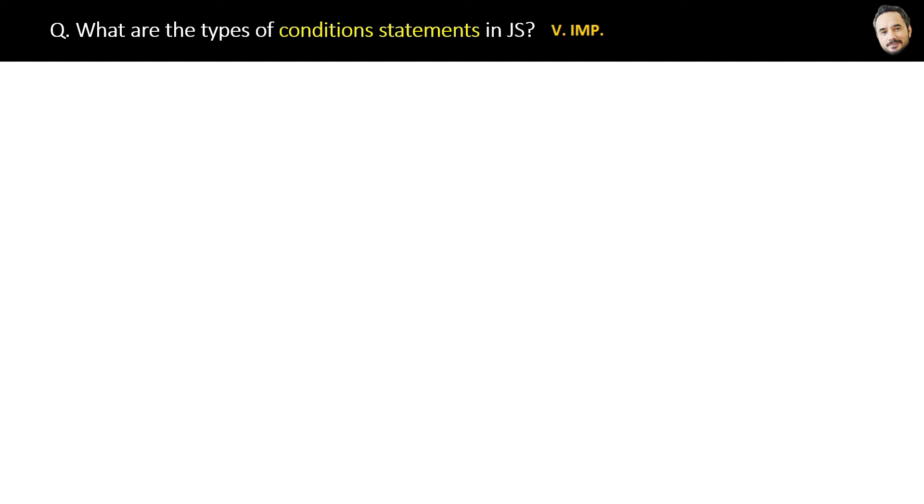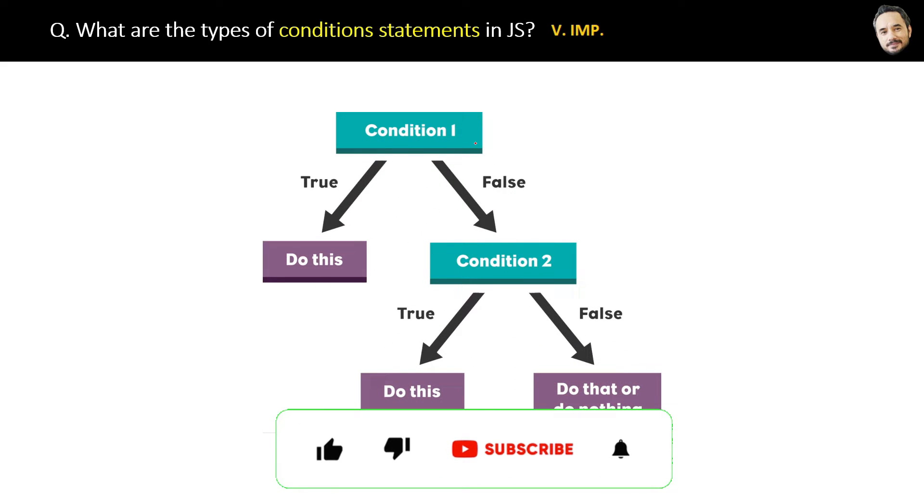What are the types of conditional statements in JavaScript? Very important question in the history of any programming language. We know conditions: if condition one is true, do this, but if it is false, do something else.